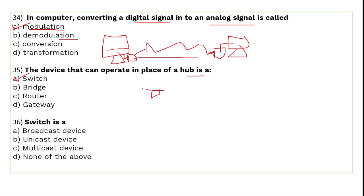Hub is a broadcast device — whatever message comes in, it sends the same message to all connected nodes. But a switch is a unicast device — it sends a message only to the specific destination device. So the switch knows exactly which computer to send the message to, rather than broadcasting to all.